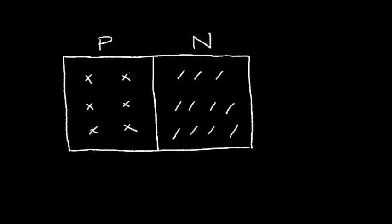Now, we said that some of the holes would diffuse to the right and the electrons would diffuse to the left. When that happened, we set up an E-field at the junction. This E-field opposes further diffusion of carriers. So, we said that we developed in the junction a depletion region that was depleted of carriers.